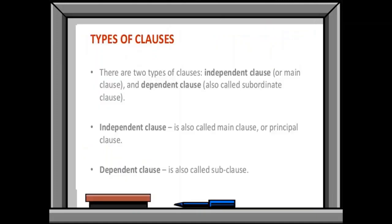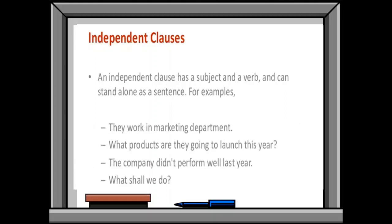Now types of clauses. There are two types of clauses. As we have read independent clause or main clause, dependent clause or subordinate clause. One can stand on its own. And one needs assistant to convey its meaning. Independent clause has a subject and a verb and can stand alone as a sentence.